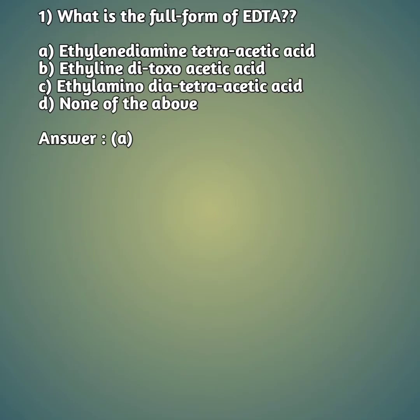Our first question: what is the full form of EDTA? Option A: ethylene diamine tetra acetic acid. Option B: ethylene di toxo acetic acid. Option C: ethyl amino di tetra acetic acid. Option D: none of the above. The right answer is option A — ethylene diamine tetra acetic acid.